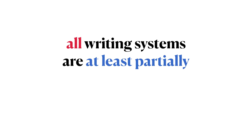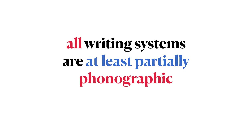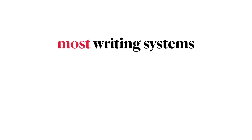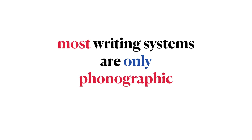All writing systems are at least partially phonographic in nature. That is, every single writing system in the world that is used to write human language encodes sound. Most writing systems are only phonographic in nature — for most writing systems in the world, only sound information is encoded in the symbols.